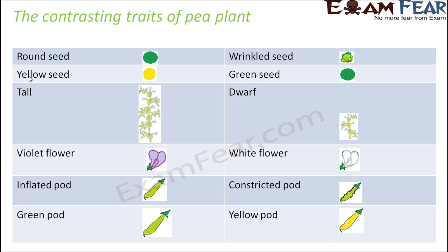Some of the contrasting traits of the pea plant: the pea plant has many different traits which vary across different types. Some of them were the round seed and wrinkled seed — so the shape of the seed in some plants is round, in some plants it is wrinkled. The colour of the seed also varies: in some plants it is yellow, whereas in some other plants it is green. Height of the plants: some plants are too tall while others are too short. Colour of the flowers: in some plants it is violet while in others it is white.